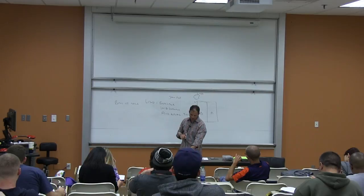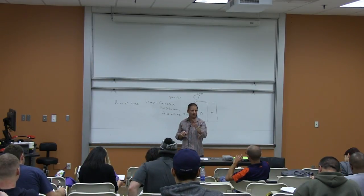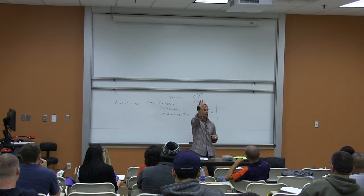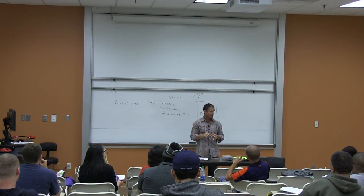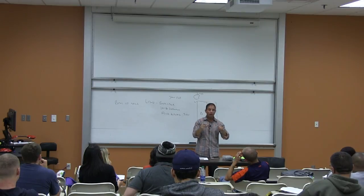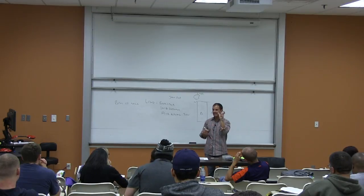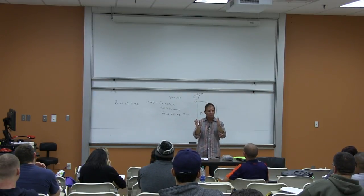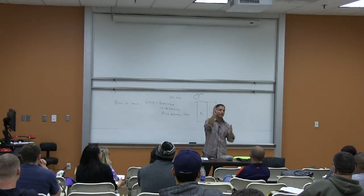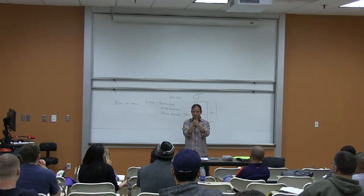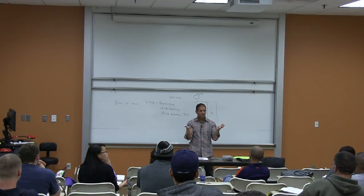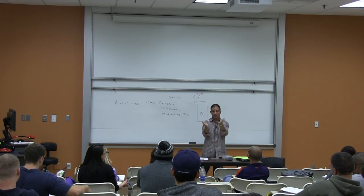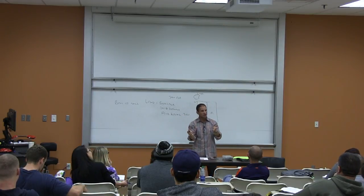Number four: the intention of the annexor — this is the most important test of a fixture. What is the intention of the person attaching the item? The new version of our contract specifically states the TV itself is personal property but the bracket is real property. Personally, I disagree — I think if you're mounting a TV to a bracket on the wall, the bracket and TV together are one piece and that would be a fixture.